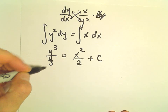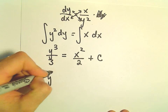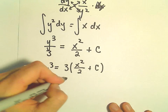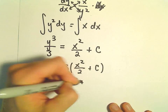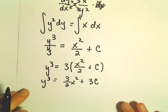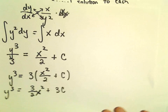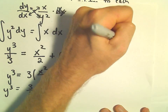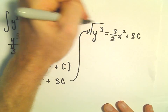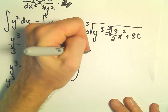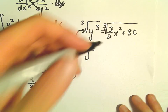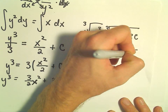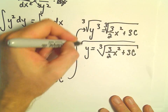We can even solve for y in this case. Multiply both sides by 3, so we get 3 times x squared over 2 plus c, which is 3 halves x squared plus 3c — and that's going to equal y cubed. Now to get y by itself, we take the cube root of both sides. So y equals the cube root of 3 over 2 x squared plus 3c, and that would definitely be a solution.